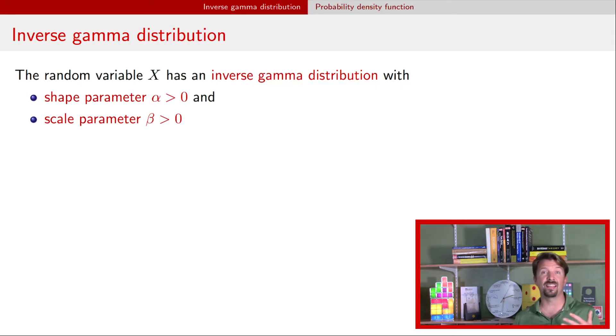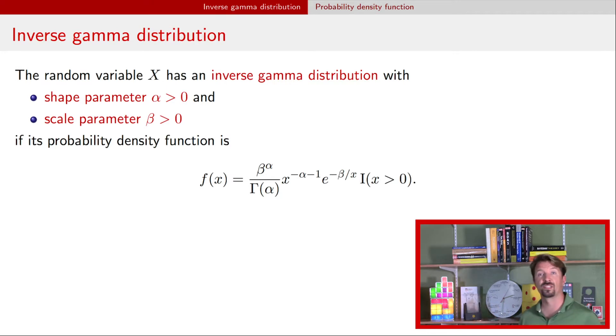A random variable has an inverse gamma distribution if its probability density function looks like this. So the first thing to note is that indicator function that tells you the support for this random variable is for positive real numbers. And the second thing to note is the kernel of this distribution, which has the random variable raised to the negative alpha minus 1 power, and then e to the negative beta divided by that random variable.